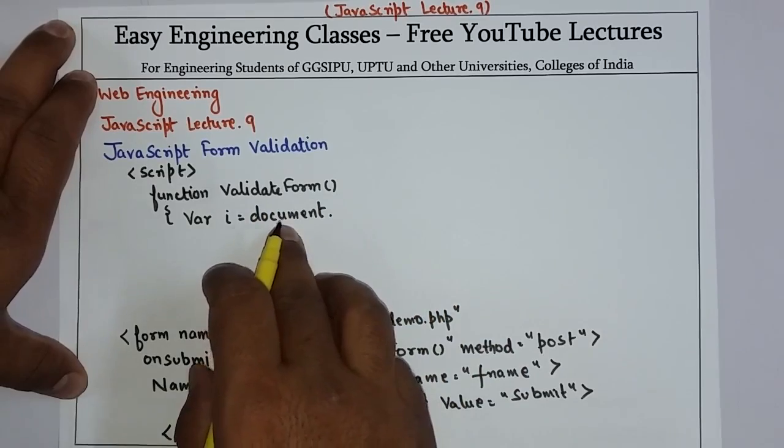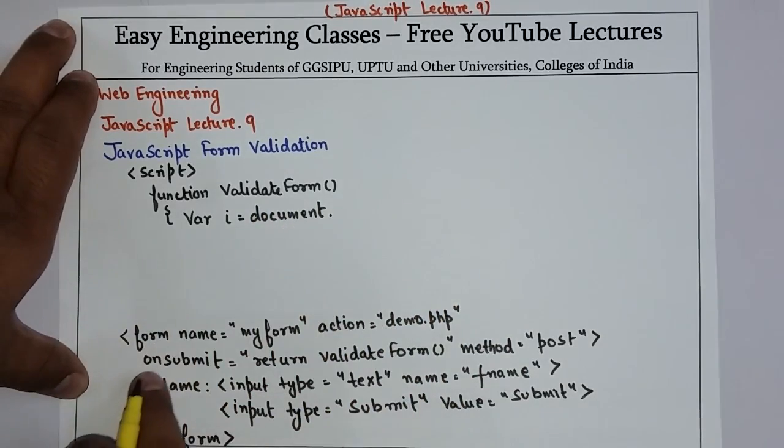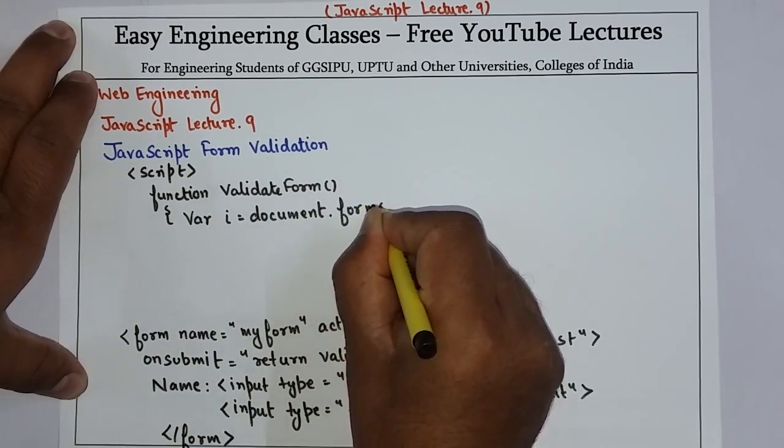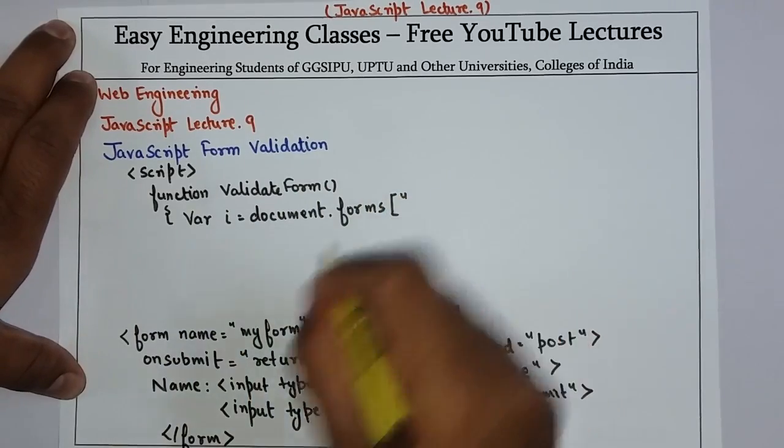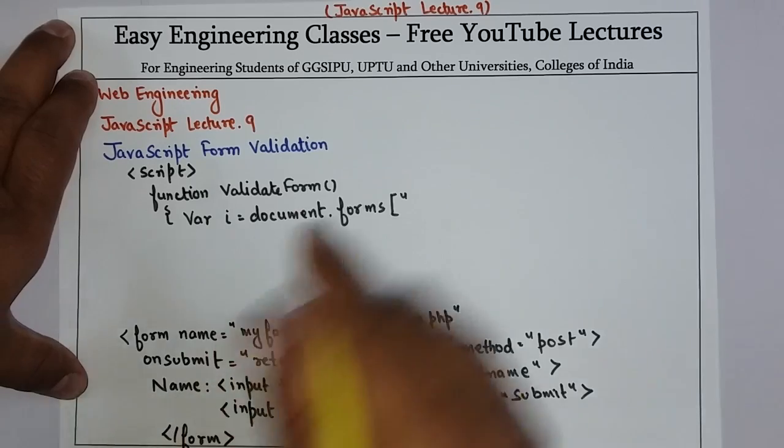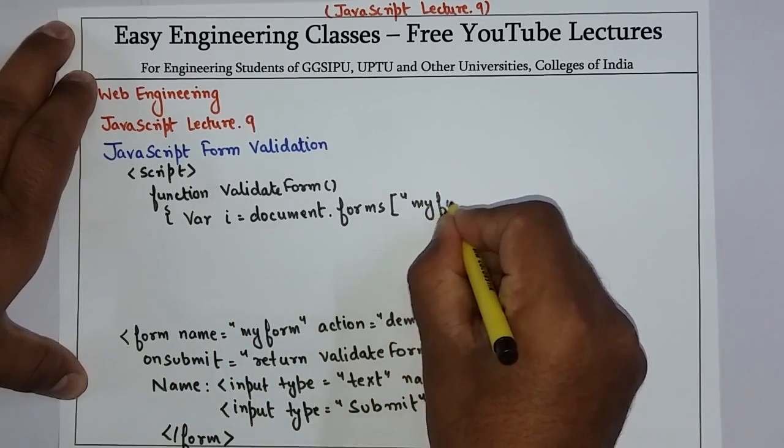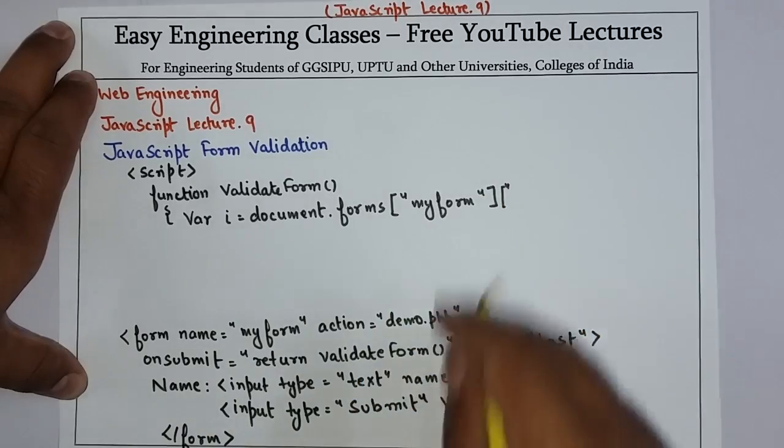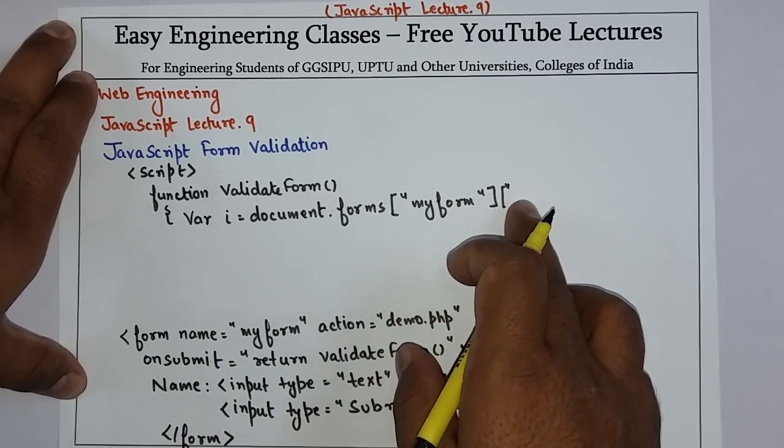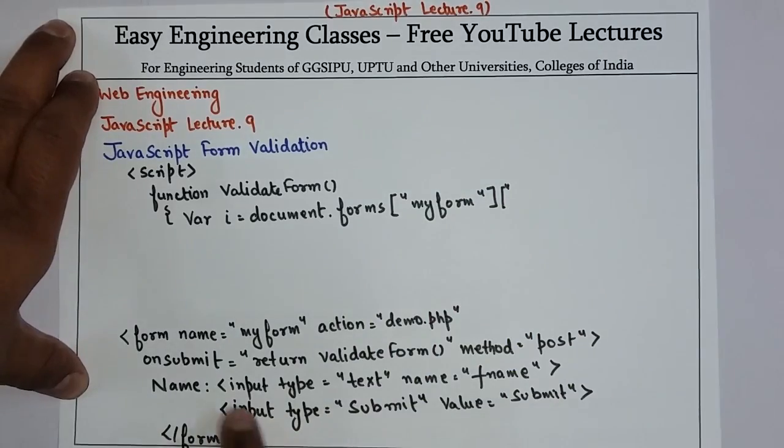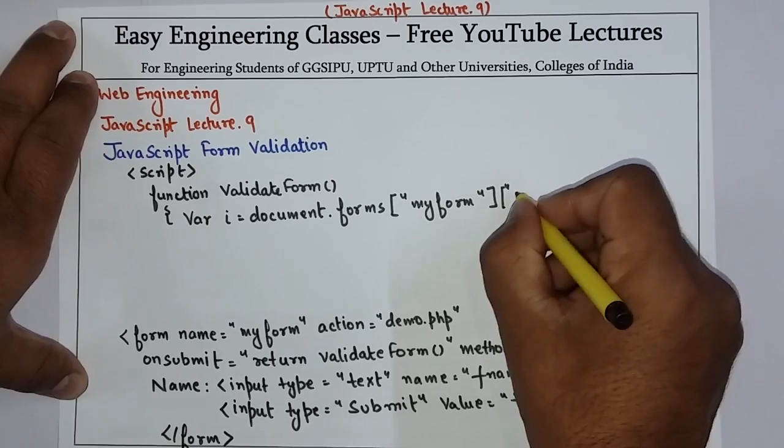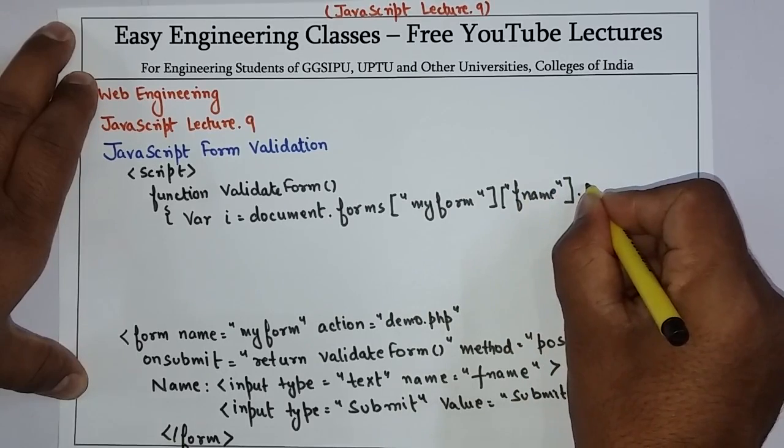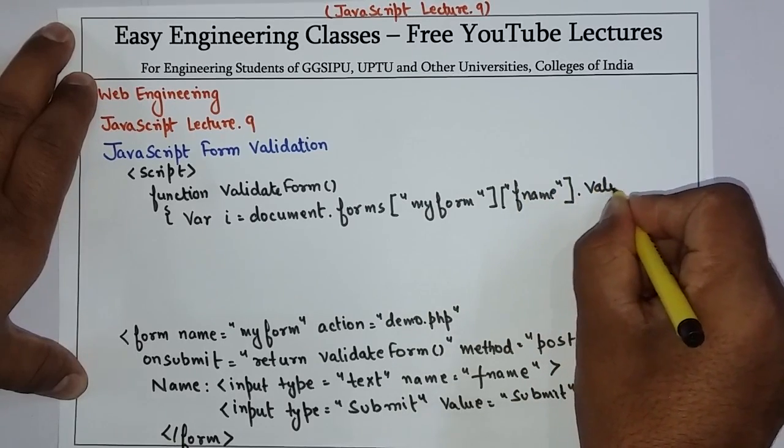For that, you need to use the Document Object Model, that is root document HTML. In this document, we have to access the forms. So write document.forms, and in this write the name of the form which is myform. And in myform, which field I want to access? The name of that field is fname, so here write fname.